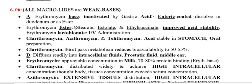Now regarding pharmacokinetics — absorption, distribution, metabolism, and excretion. As mentioned, macrolides are weak bases, and in the acidic stomach environment the drug gets degraded. When erythromycin is administered in base form, the drug is inactivated by gastric acid. Therefore, erythromycin base preparations are given with an enteric coating, which dissolves not in the stomach but in the duodenum, making the drug orally active.